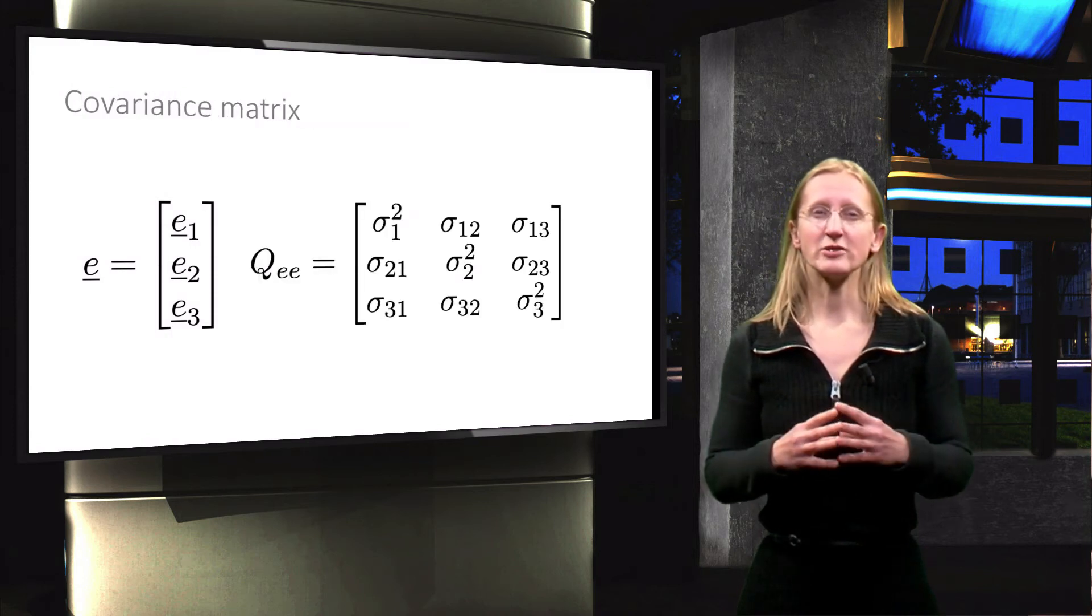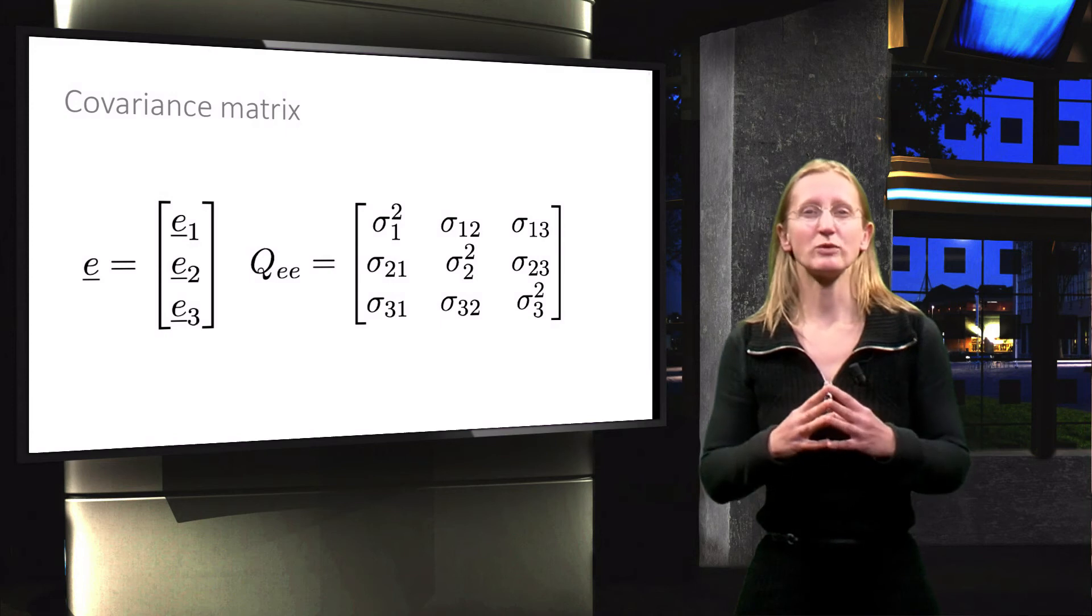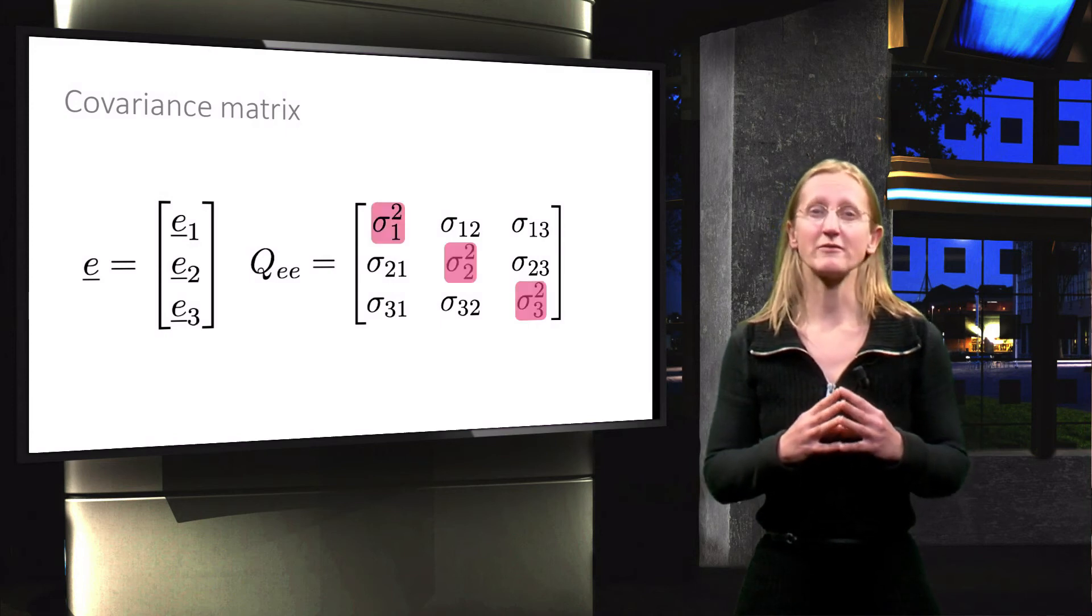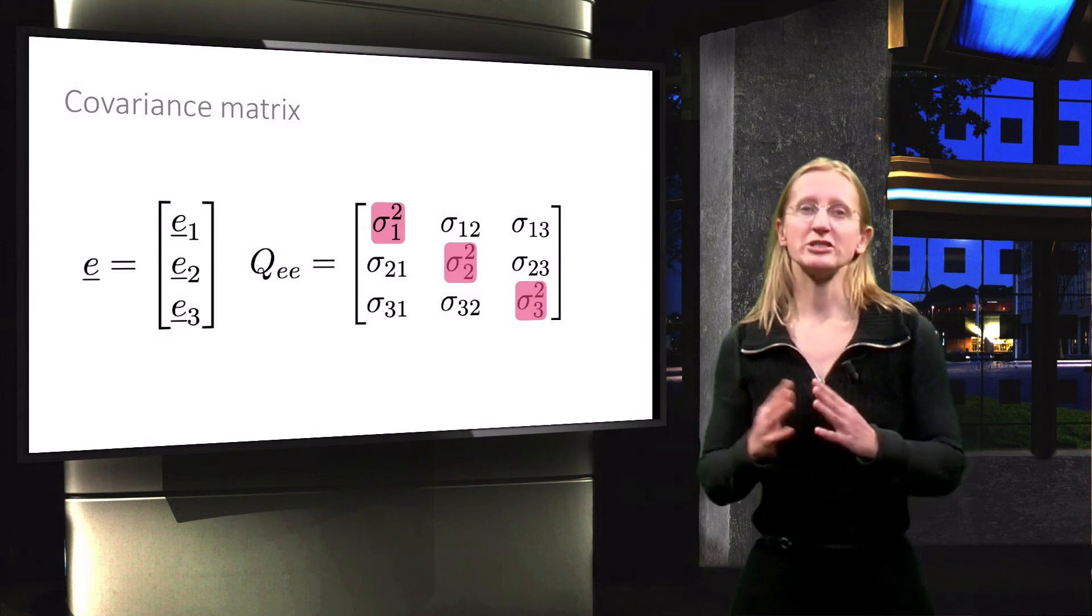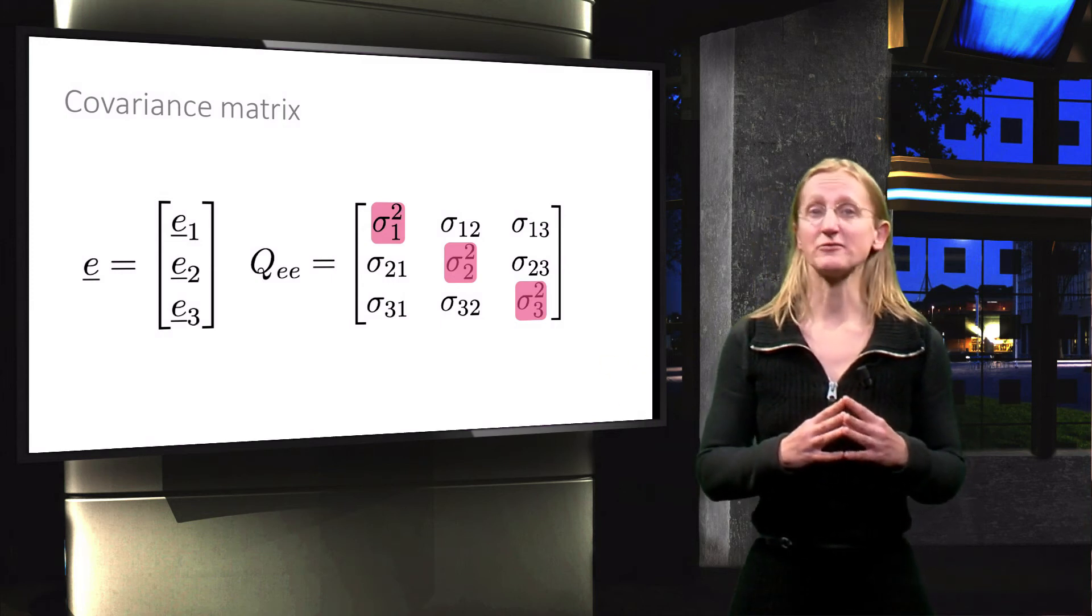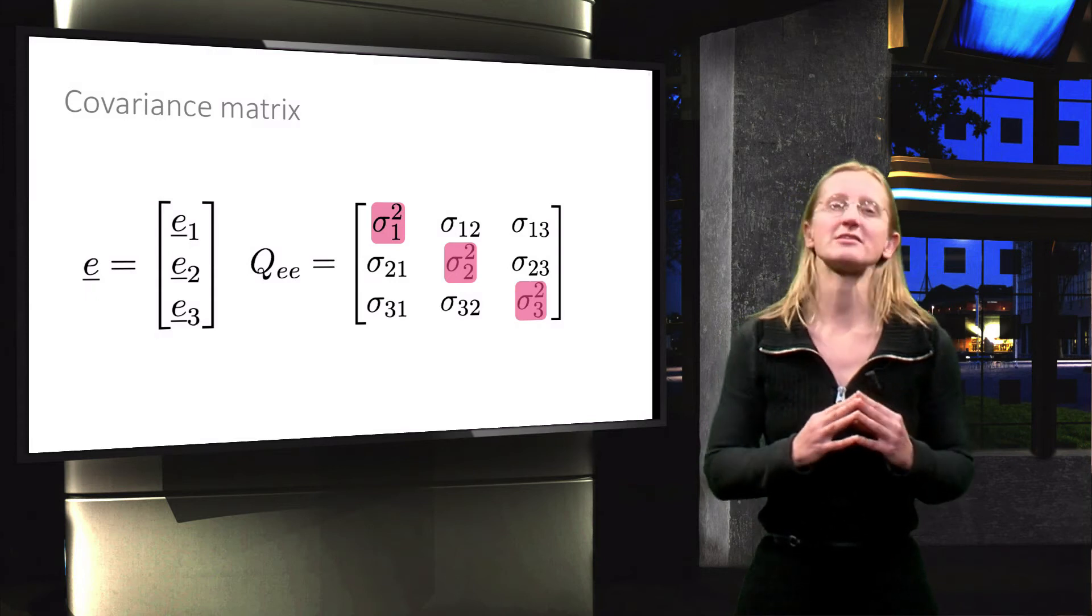The covariance matrix is defined by the shown matrix in which the diagonal elements are the variances of the three random errors. To keep the notation simple, only the index of the corresponding error is used as a subscript.